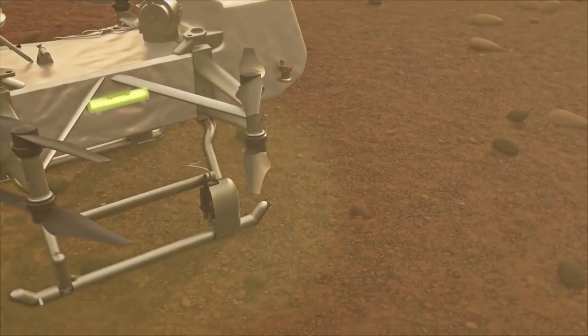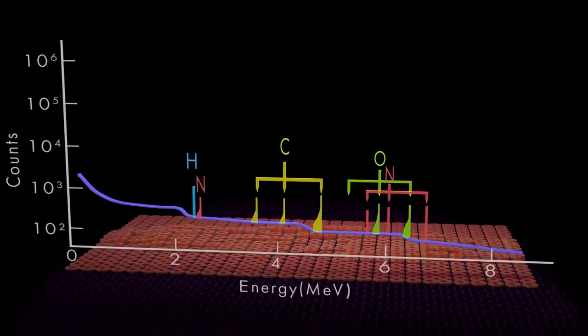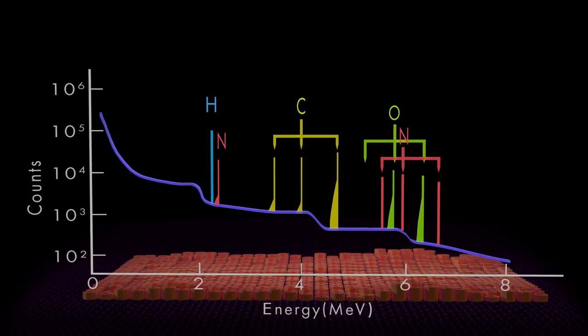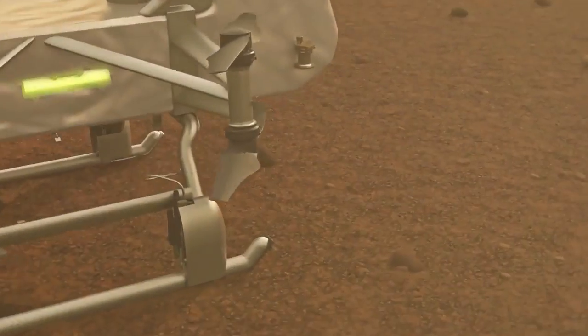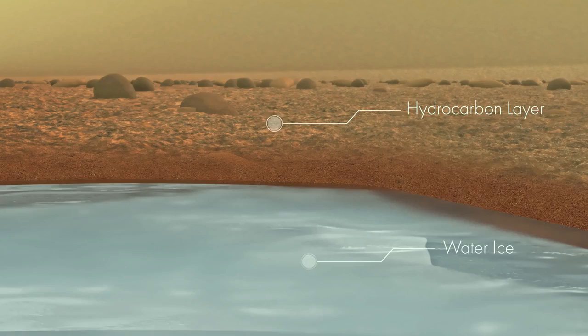Dragonfly uses a pulsed neutron generator and onboard gamma-ray sensor to detect key elements such as carbon and hydrogen in organic materials or oxygen in water ice. Dragonfly determines if there are well-defined layers of these materials just below the lander.